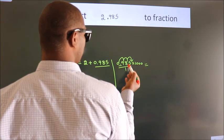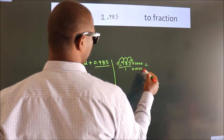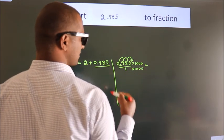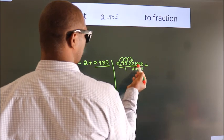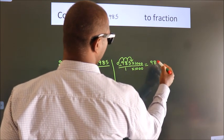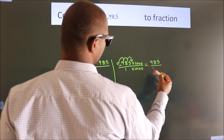Whatever number you multiply in the numerator, in the denominator do the same. Next, 0.985 into 1000 is 985. 1 into 1000 is 1000.